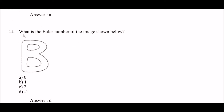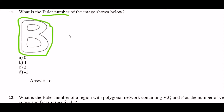Next question: what is the Euler number of the image shown below? Options are: A: 0, B: 1, C: 2, D: minus 1. The Euler number is minus 1. The right answer is option D. If you don't understand the numerical, please comment and tell me — I will explain it in a separate video.